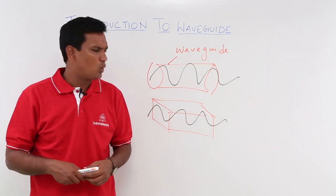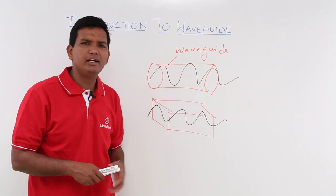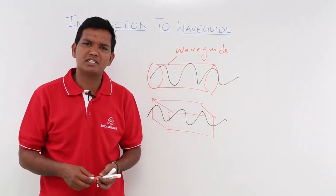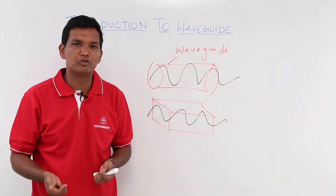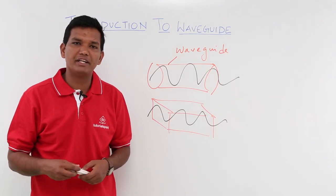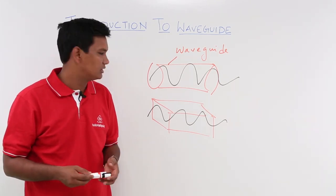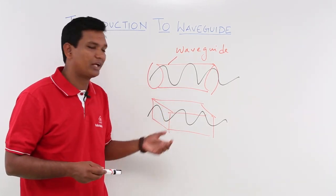One may ask why I need a waveguide. I already have studied transmission lines, parallel wire, microstrip line, even coaxial cables. Then why do I need these circular or rectangular waveguides?